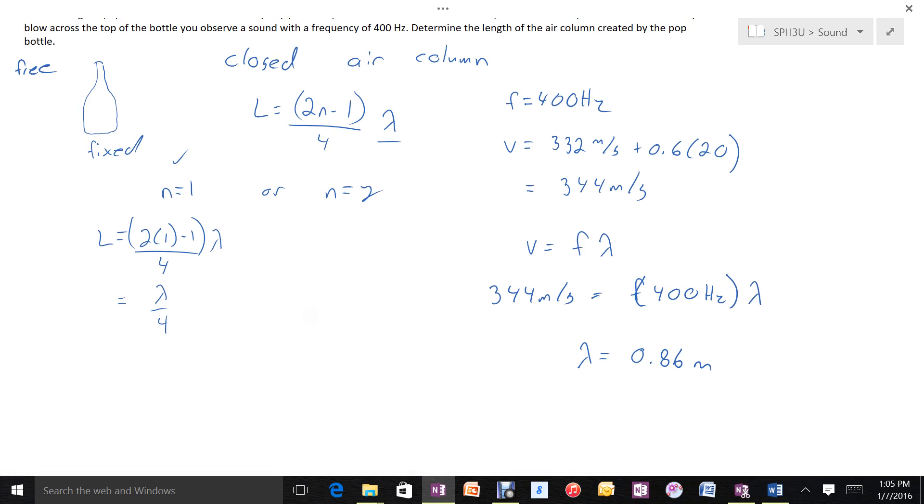Now I can determine how long my pop bottle must be. I could use n equals 1 or n equals 2. It's far more likely to be n equals 1, but let's compute both and see which looks more realistic.